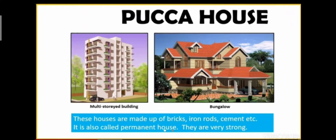Look at the first picture. This is a multi-storey building. Multi-storey buildings are also known as apartments or flats. Multi-storey buildings are common in big cities like Delhi, Mumbai, Chennai and Kolkata.